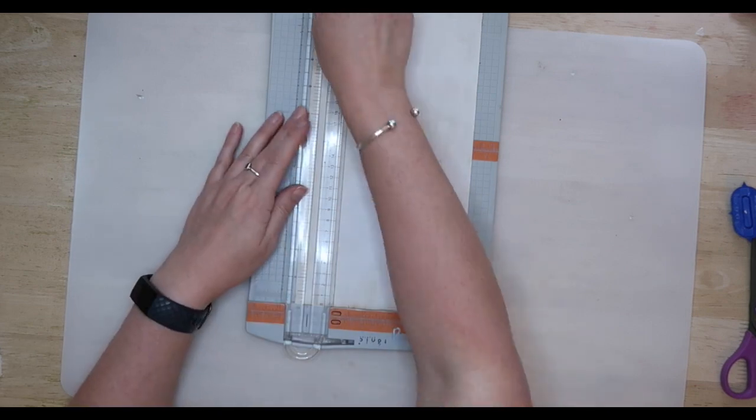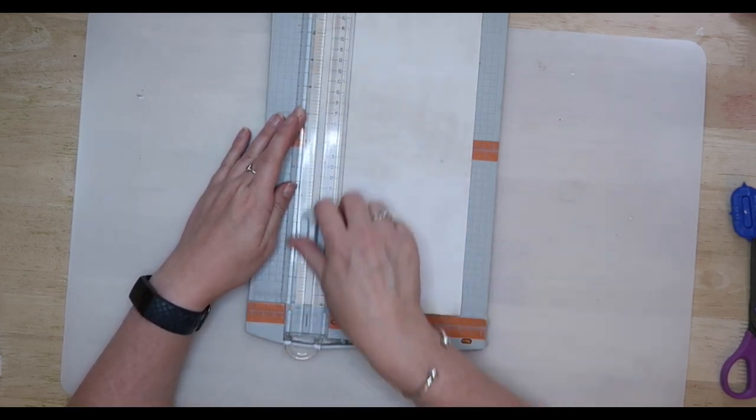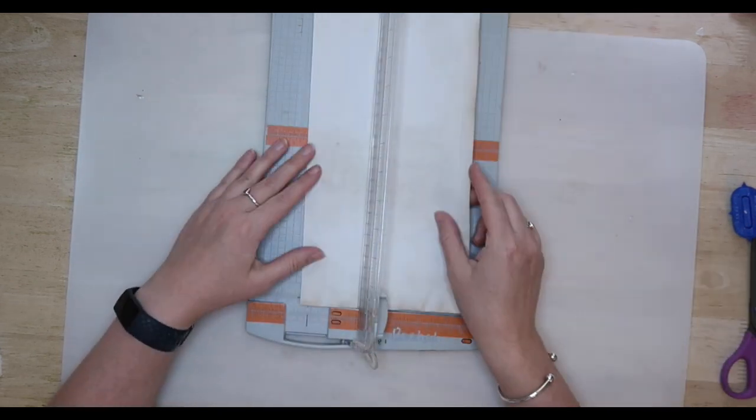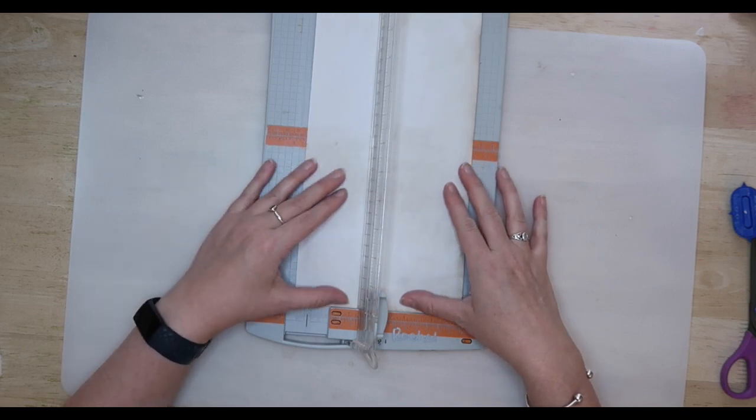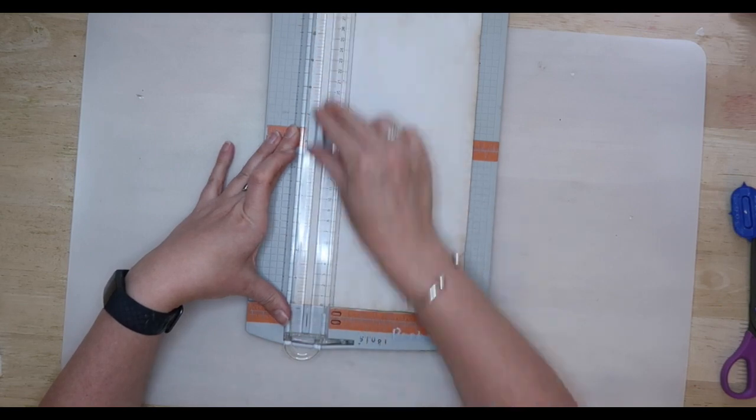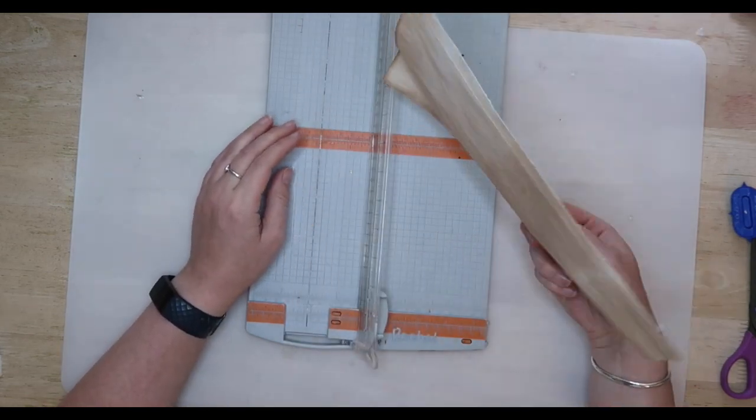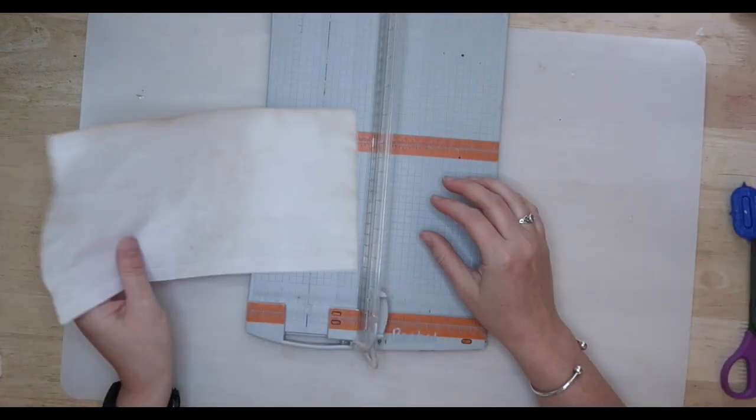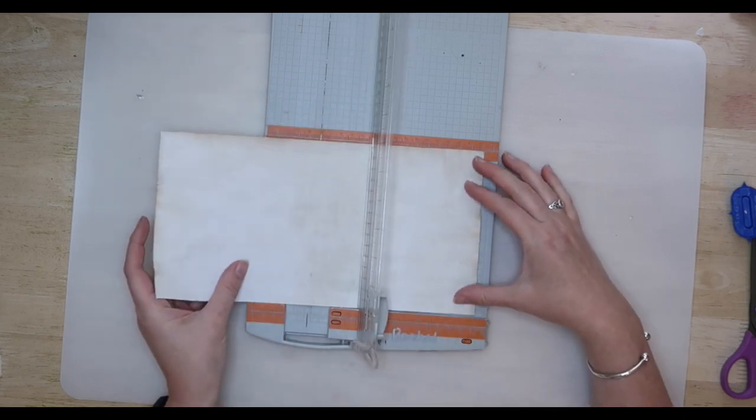To start with you will need a piece of paper which measures 6 inches by about 11 and a half inches high. The first thing you need to do is to score some lines. You need to score at half an inch from the left hand side and at half an inch from the right hand side. I am using the scoring attachment on my paper trimmer.